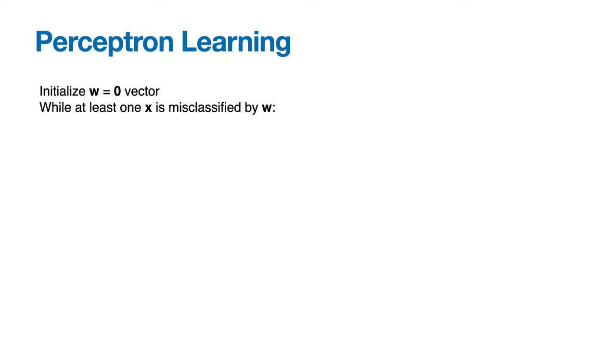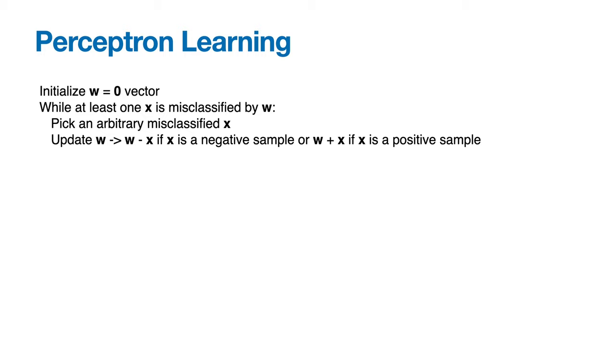While at least one x is misclassified by w, pick an arbitrary misclassified x, and update w to be w minus x if x is a negative sample, or w plus x if x is a positive sample. Keep in mind that if x lies on the hyperplane defined by w, we always call it misclassified.